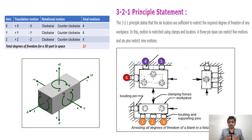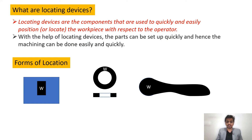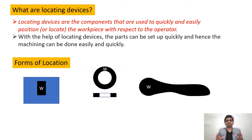Let's look at the types of locating devices. Locating devices are components used to quickly and easily position the workpiece with respect to the operator. The orientation of the part plays an important role — whenever you consider any machine, the part should be placed in a particular orientation. With the help of locating pins, we can ensure that the part is loaded in the correct position.